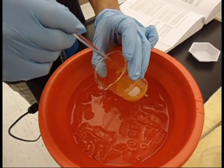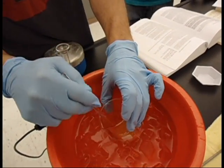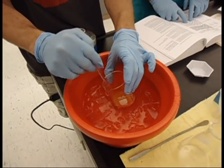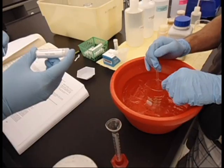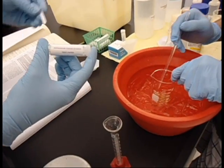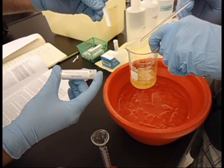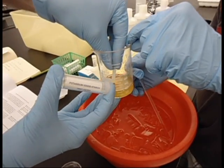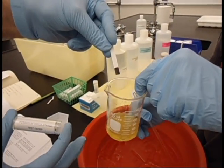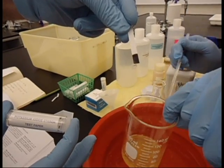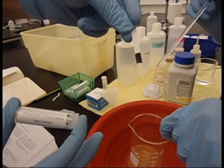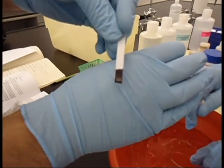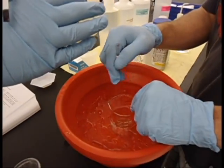Now that we added our sodium nitrite, we're going to test it to see if we added enough with the starch paper. We're looking for a blue-black color, and we have a black color that's slightly blue. That looks like we got enough sodium nitrite in there to be good.